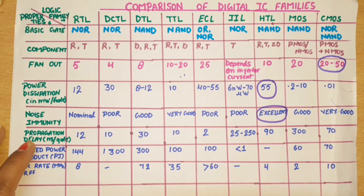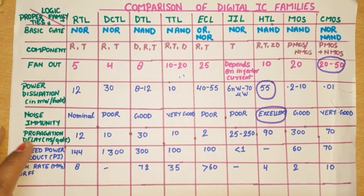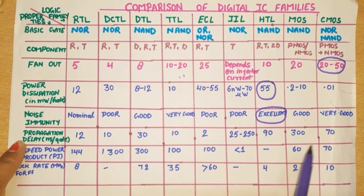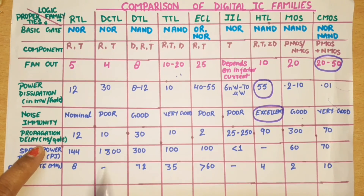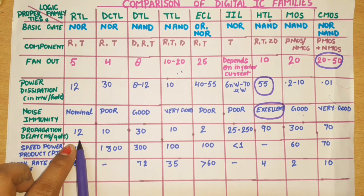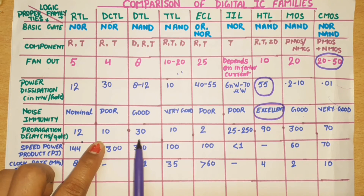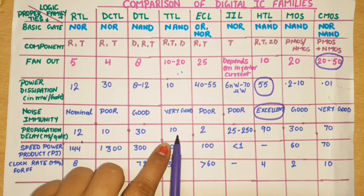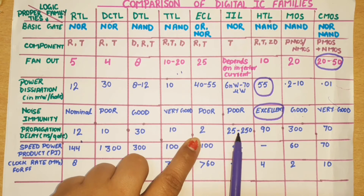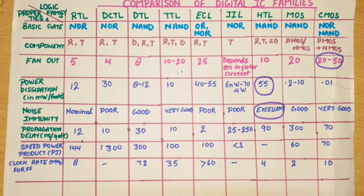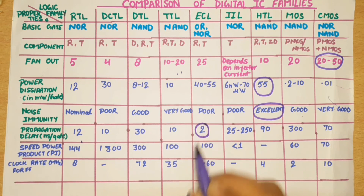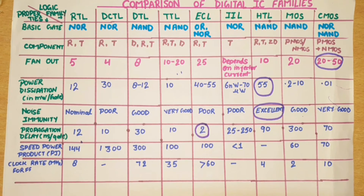Now propagation delay — its unit is nanoseconds per gate. If delay is high, speed is slow. RTL is 12 ns, DCTL is 10 ns, DTL is 30 ns, TTL is 10 ns, ECL is 2 ns, I2L is 25 to 250 ns, HTL is 90 ns, MOS is 300 ns, and CMOS is 70 ns. ECL is the fastest because its propagation delay is very low — it does not go into saturation.